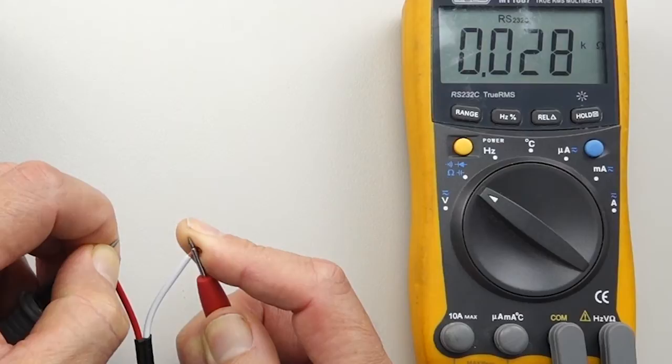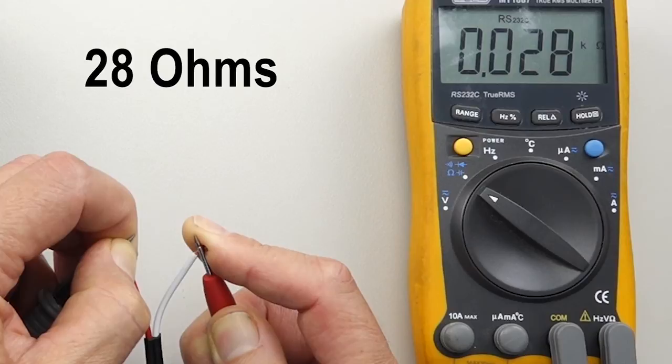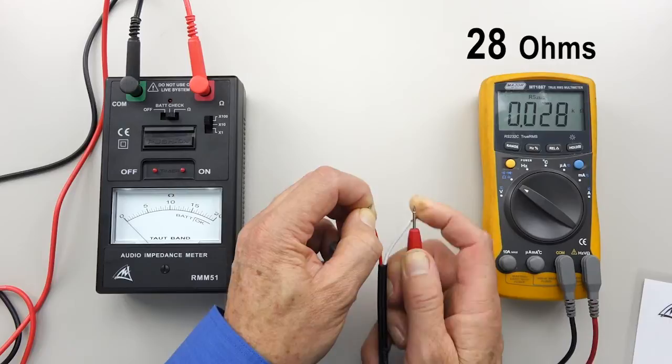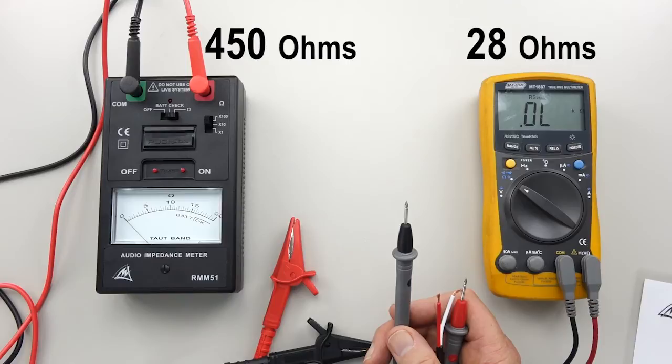Connecting the multimeter to it, 0.028K, which is 28 ohms, a big difference between the two. We've got 28 ohms here and when we test with the audio impedance meter we've got 450 ohms, a big difference between the two.